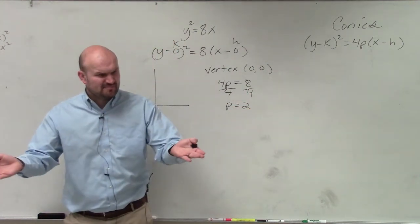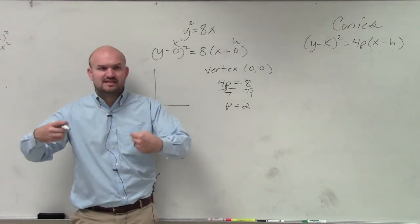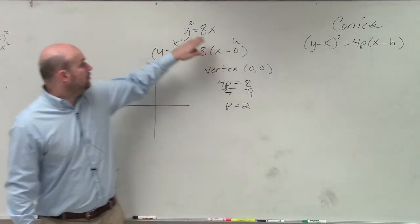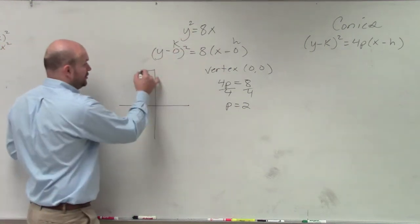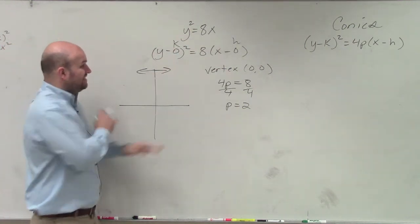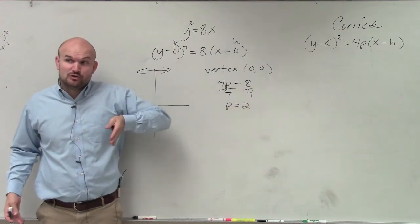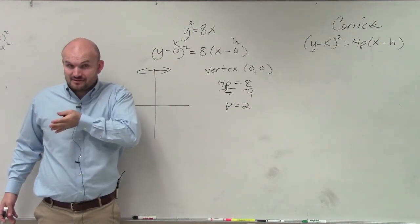So what did p represent? p represented the distance from my vertex to my focus, right? y squared tells me the graph is opening left or right. It either opens up left or it opens up right. Since p is positive, should I go to the right or should I go to the left? Right.